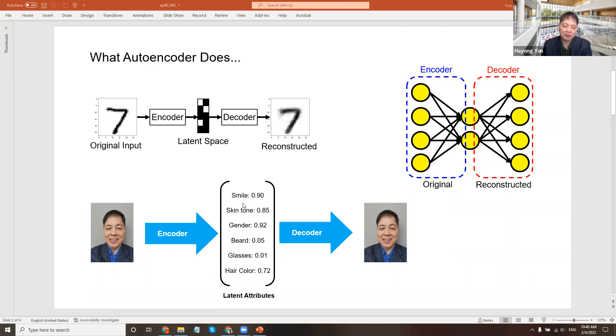We don't know what they are, but suppose they are like this. Then it goes to a decoder and blows up that image again. So that's what an autoencoder does.